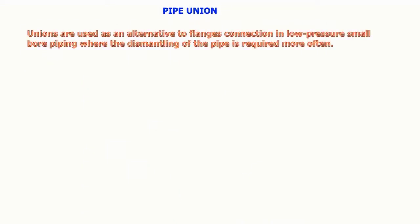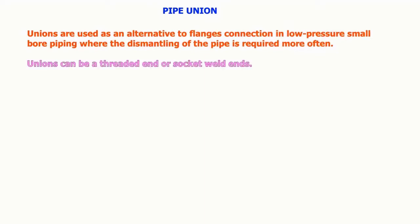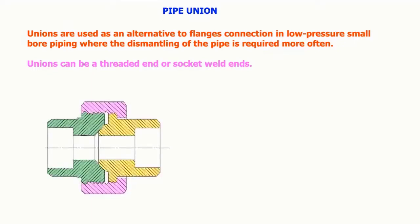Pipe unions are used as an alternative to flange connection in low-pressure, small bore piping where the dismantling of the pipe is required more often. Pipe unions can be threaded end or socket weld end.